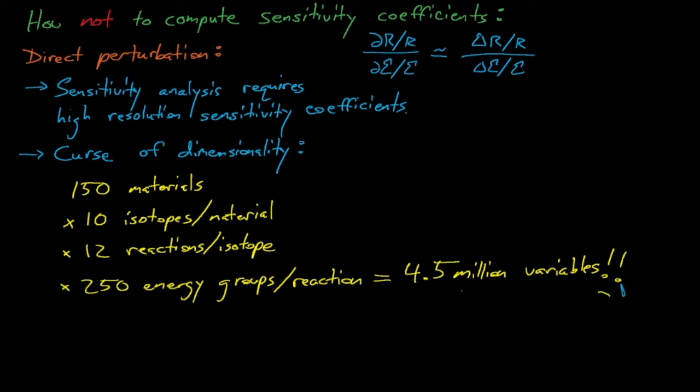If we can compute these sensitivity coefficients for each of these variables using only one direct perturbation, then that's a minimum of 4.5 million calculations, but in reality that's actually pretty optimistic. Usually we need multiple perturbations per variable to properly identify linear behavior, and this assumes that our perturbations are sized perfectly so that they produce a linear perturbation that is statistically significant compared to stochastic uncertainty.